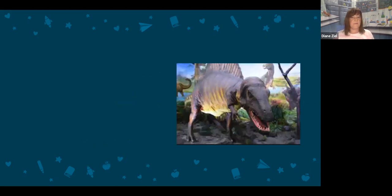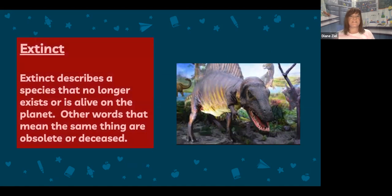Take a look at this example. Which vocabulary word do you think this is an example of? If you said extinct, you are absolutely correct. Dinosaurs are an extinct species. Extinct describes a species that no longer exists or is alive on the planet. Other words that mean the same thing are obsolete or deceased.